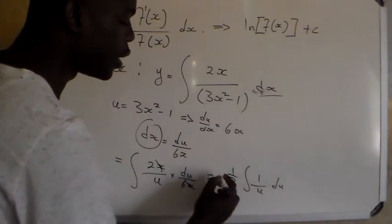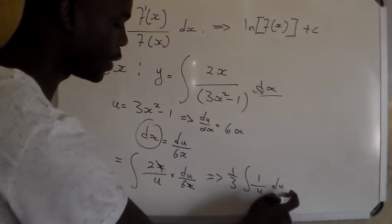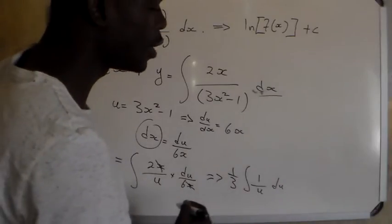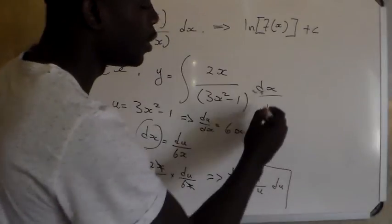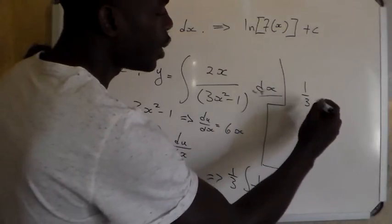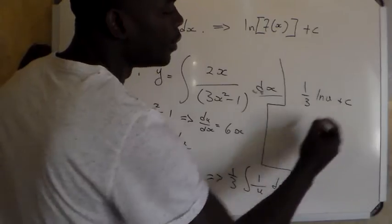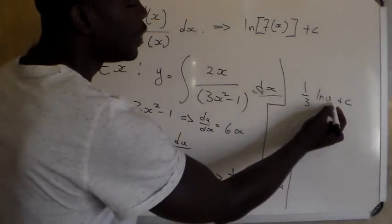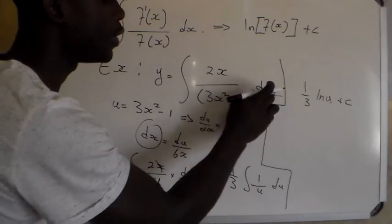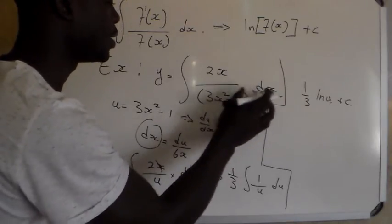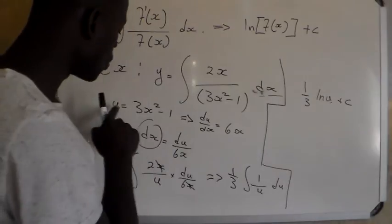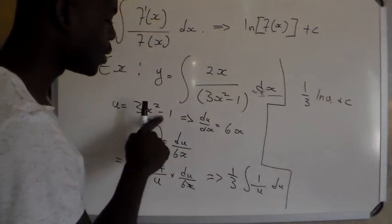The integral of 1 over u is ln|u|. So the result is 1 over 3 ln|u| plus c. Then we substitute the value of u back, because we want the integral in terms of x — since we originally had dx, we integrate in terms of x, not u. So we substitute u equals 3x² - 1.